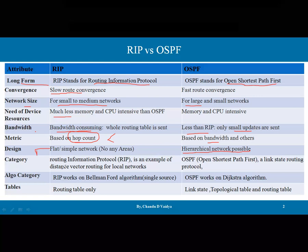In terms of category, Routing Information Protocol is an example of a distance vector routing protocol used for local networks. OSPF is an example of a link state routing protocol, which is an open standard protocol preferred for large networks.